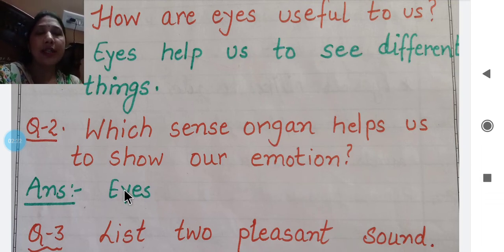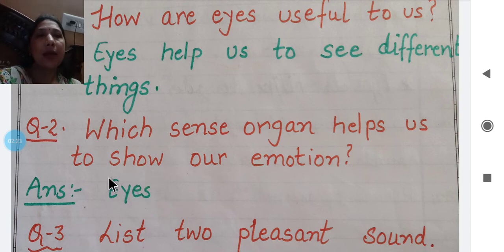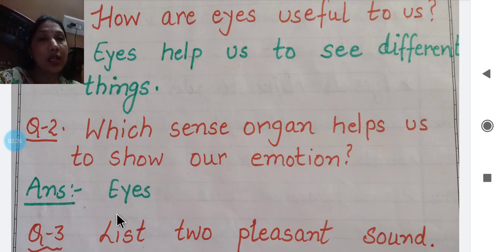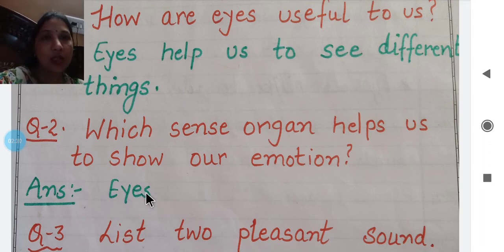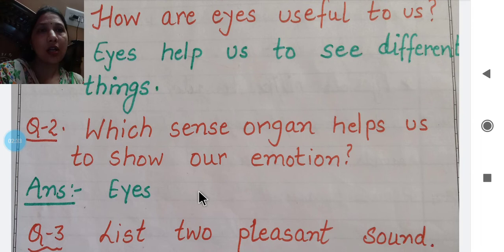Eyes को देखकर ही आप बता सकते हो किसी person की कि वो खुश है या उसे बहुत गुस्सा आ रहा है। So which sense organ helps us to show our emotions? That is eyes.